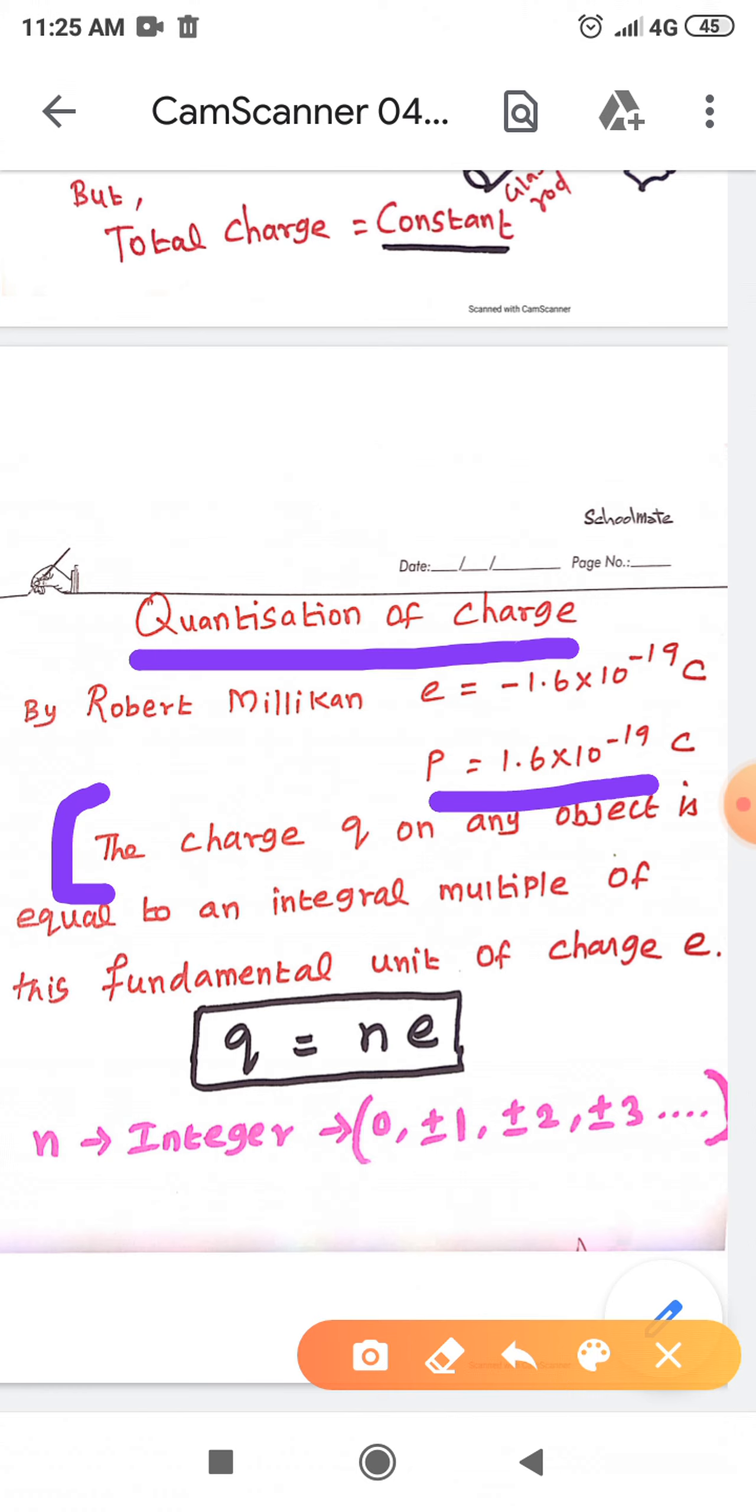The charge Q on any object is equal to an integral multiple of this fundamental unit of charge. This statement can be rewritten mathematically as Q is equal to N into E, where N is an integer and its value may be 0, plus or minus 1, plus or minus 2, plus or minus 3, and so on. The plus symbol is for the charge of proton and minus symbol is for charge of electron.